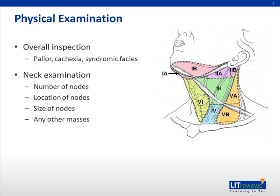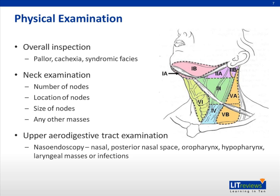Central neck lumps should be approached as per the thyroid or thyroglossal cyst examination, and lateral neck lumps should follow the general inspection, palpation, and percussion examination. Following the neck examination, we move on to a full upper aerodigestive tract examination.